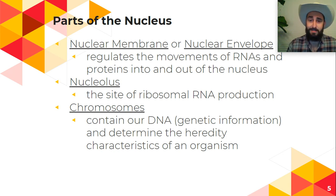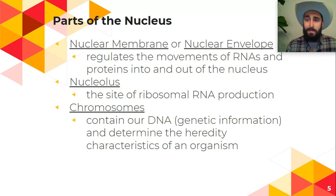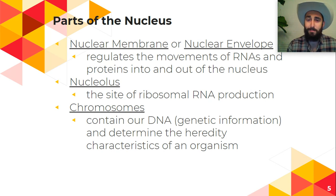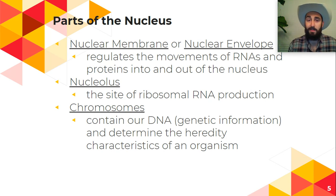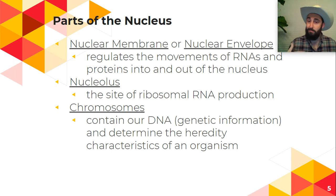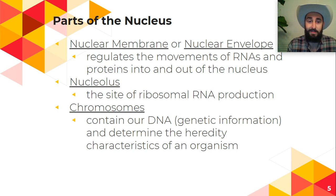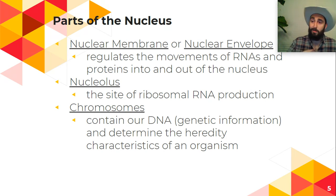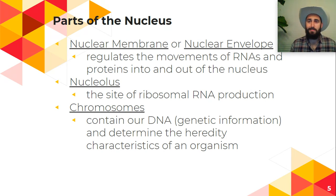There's another little thing inside the nucleus called the nucleolus, and it is the site of ribosomal RNA production — basically the nucleolus makes ribosomes. Then that nuclear membrane on the outside lets those proteins in and out. Also inside the nucleus are our chromosomes.